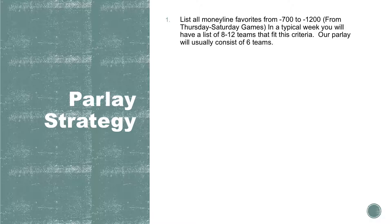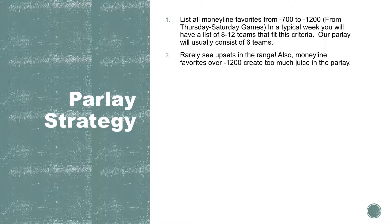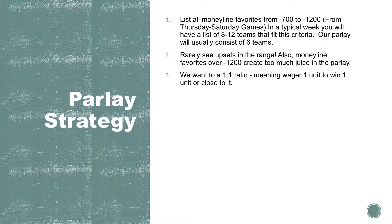The parlay we actually play will generally consist of about six teams. Rarely will you see upsets in the minus 700 to minus 1200 range, which is why I use that particular range. You will find a lot of dogs winning around the plus 500 range, but minus 700 to 1200 is pretty safe. We don't go over 1200 because it just adds more juice to the parlay. Ideally we're looking for a one-to-one ratio — wagering one unit to win one unit, or close to it.